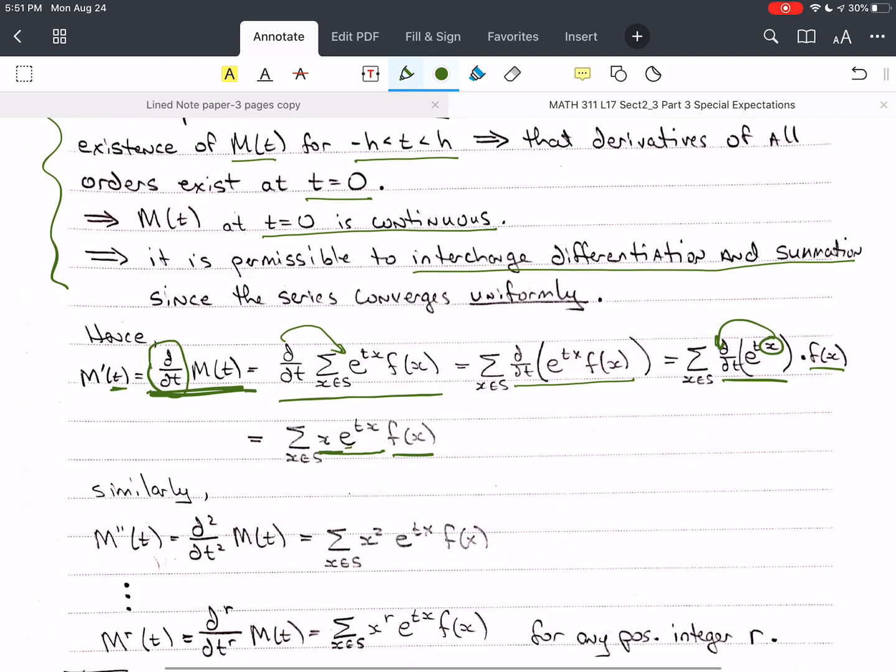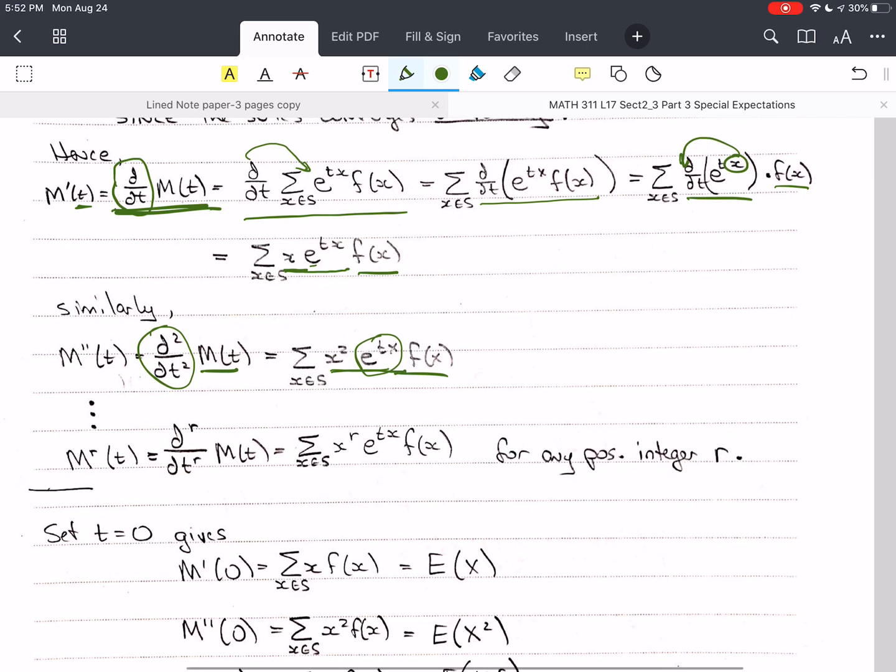And that's exactly what we see here. We have x e to the tx times f of x. Now, similarly, we can take the derivative of the first derivative and get the second derivative. And so, we have the second derivative of mt now becomes x squared because that's the thing about e to the tx, right? Derivatives of e to the t, they replicate themselves. So each time we're taking the derivative with respect to t, we get an x. So we have x squared e to the tx f of x.